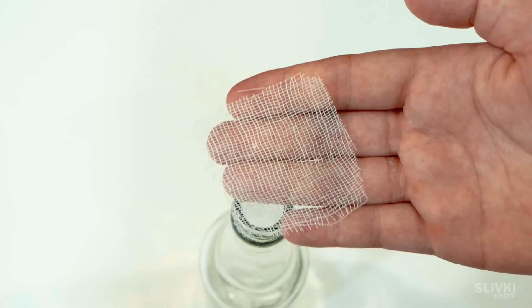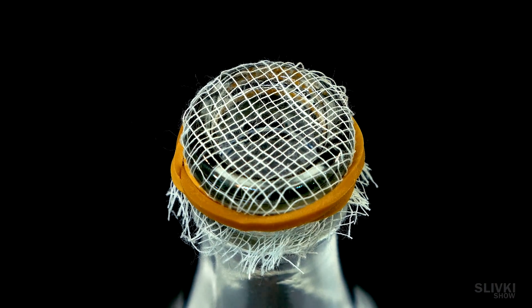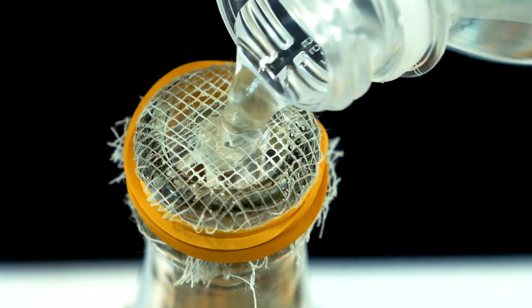Now we need a general bottle and a piece of bandage, which we are going to fix to the bottle neck using elastic. As you can see, the water runs in it without any problems.